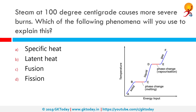Steam at 100 degrees centigrade causes more severe burns. Which of the following phenomena would you use to explain this? The correct answer is latent heat. Latent heat is the thermal energy released or absorbed by a body or a thermodynamic system during a constant-temperature process, usually a first-order phase transition.